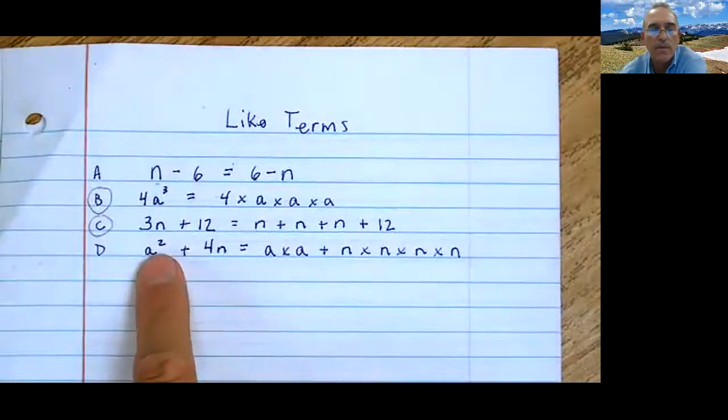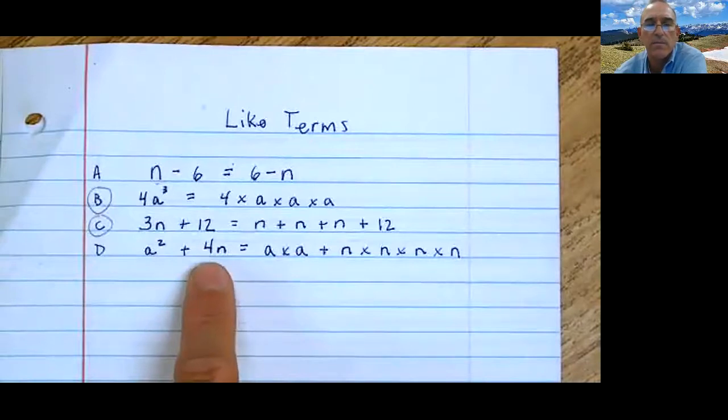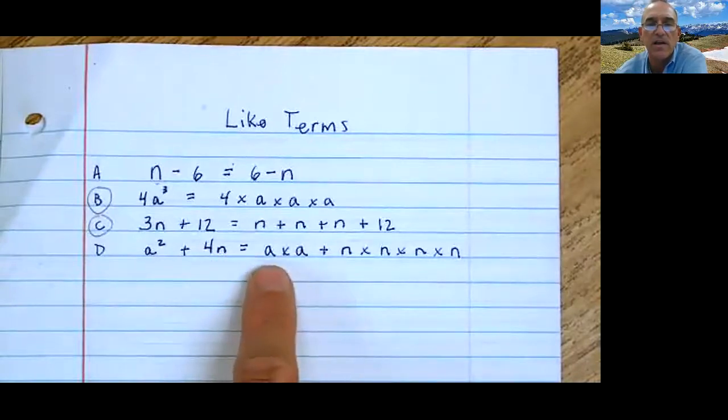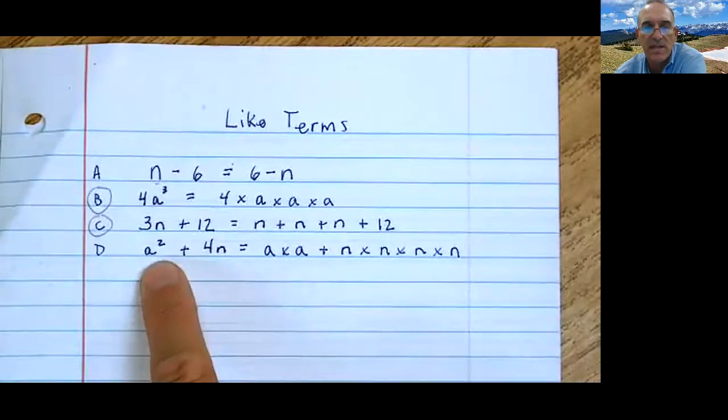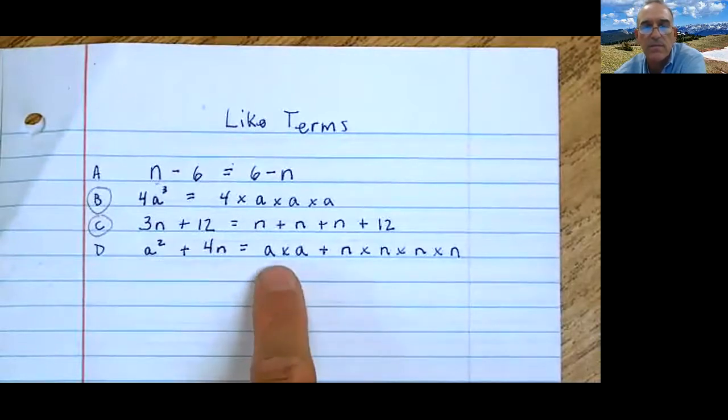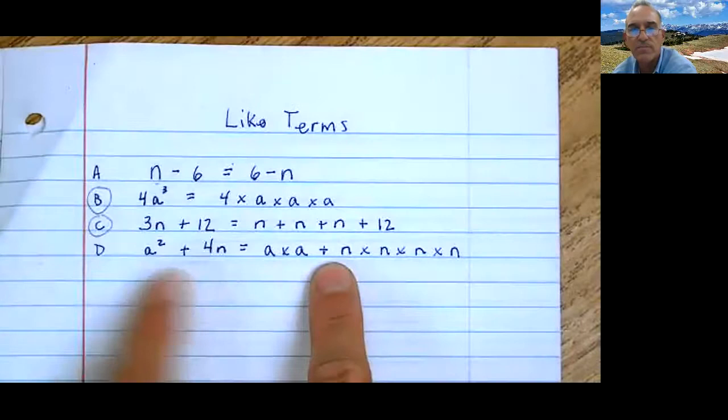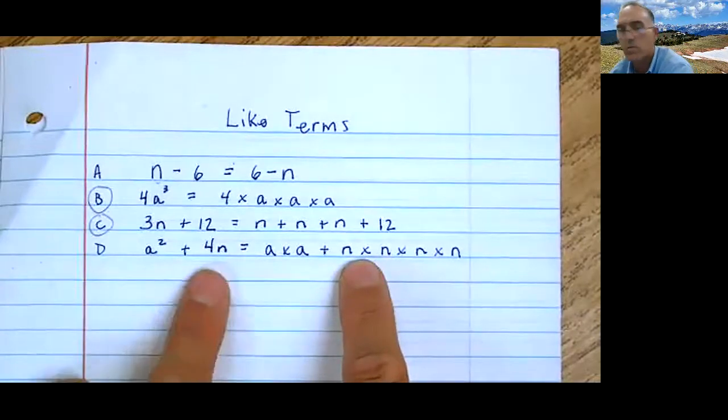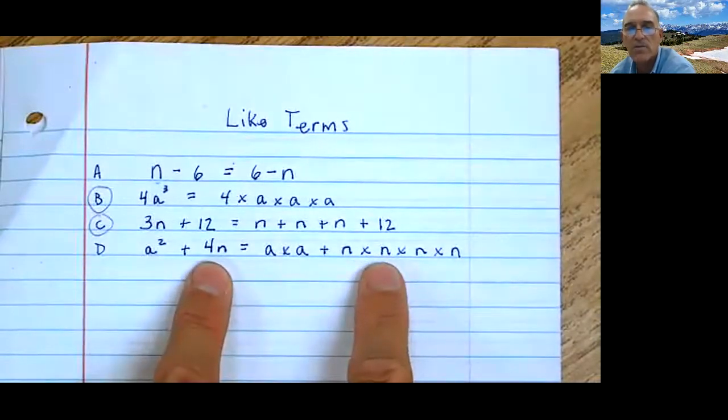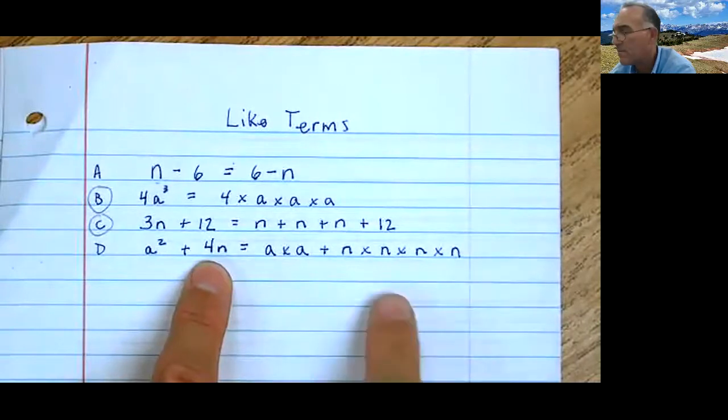Let's look at this one. a squared plus 4n. On the right side, here's your equal, on the right side I have a times a. a times a, that's that. That's that, isn't it? That's a times a. Plus, there's the plus, plus n times n times n times n. Do these n's equal that? No, they do not. This right here would be n plus n plus n plus n, right? Plus n. And this says times.